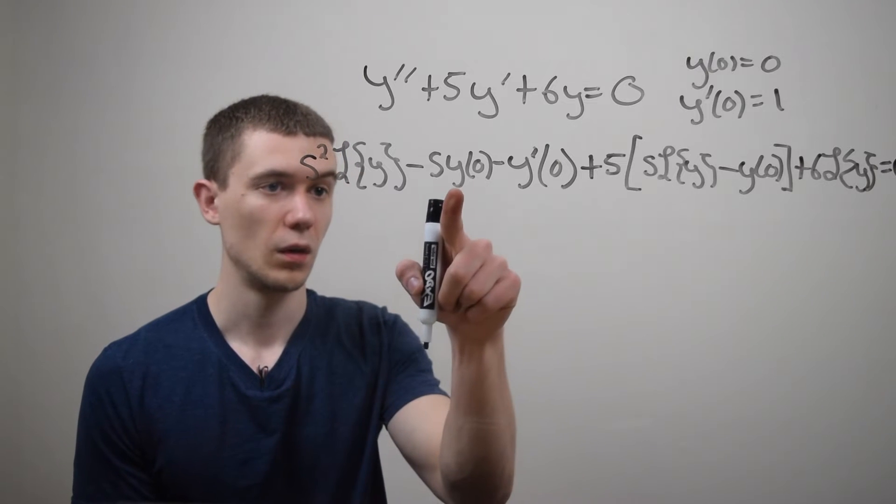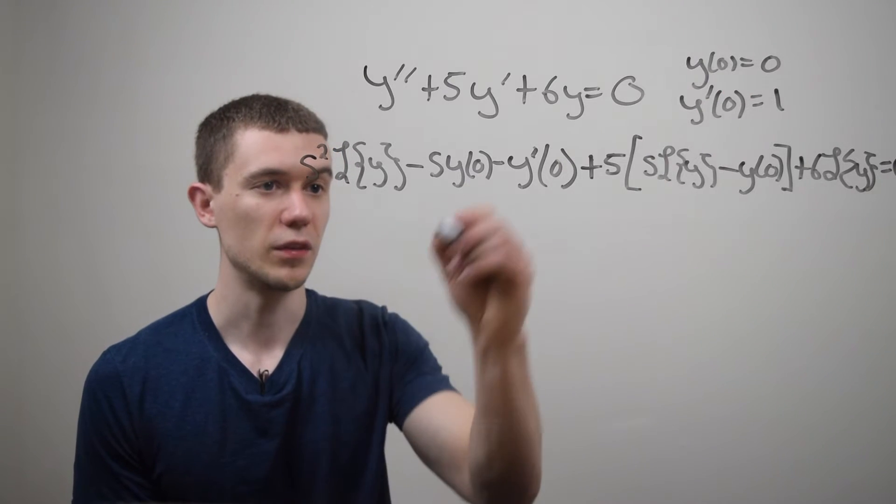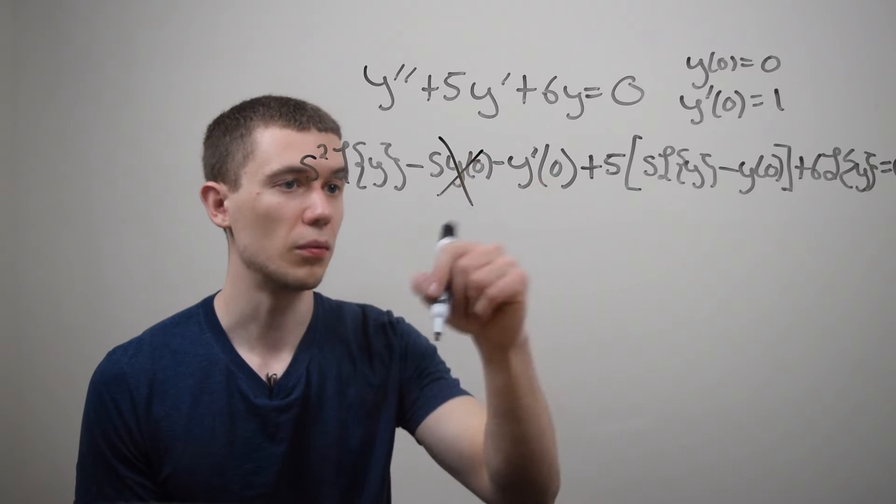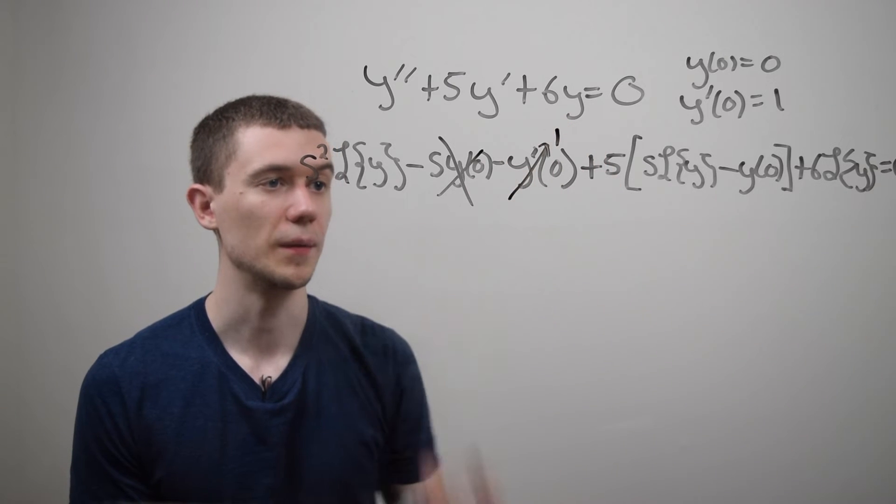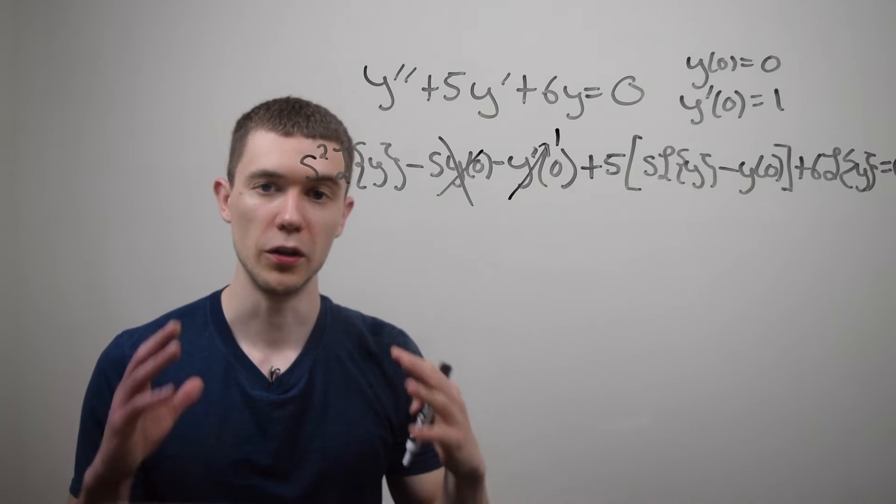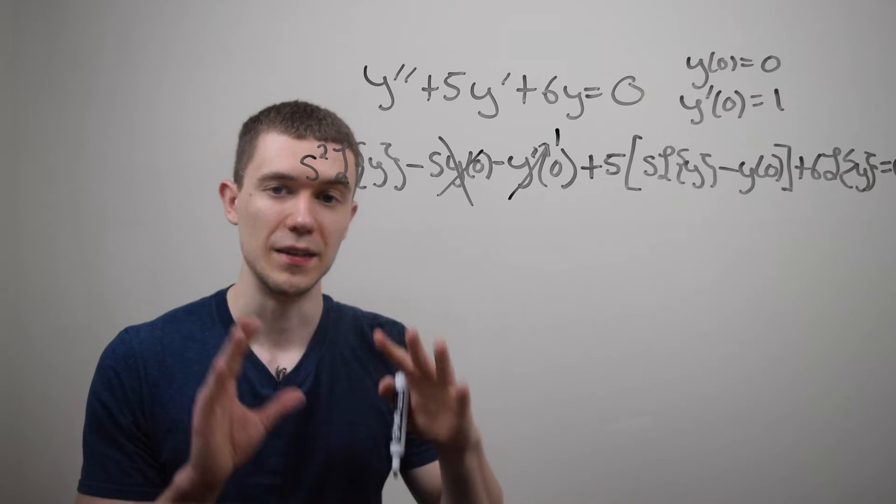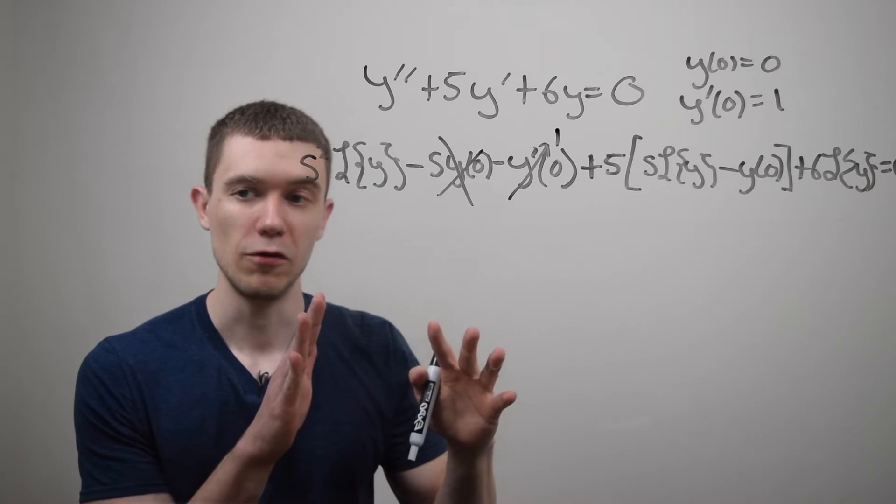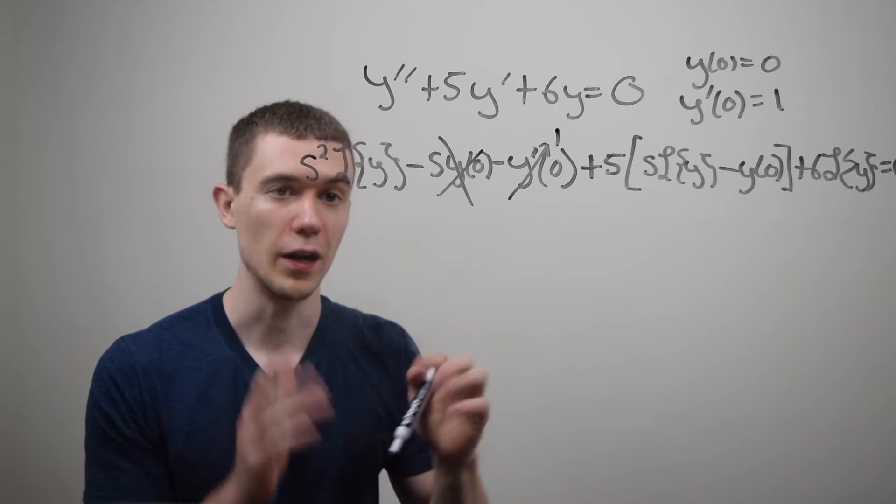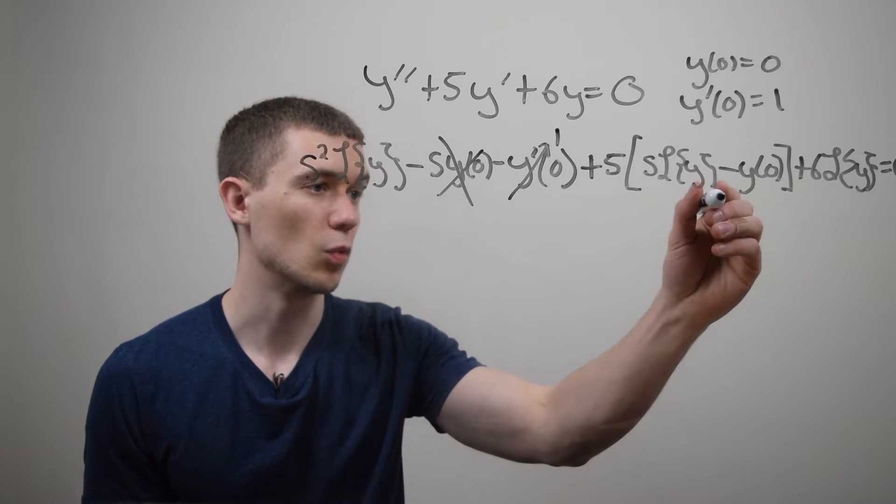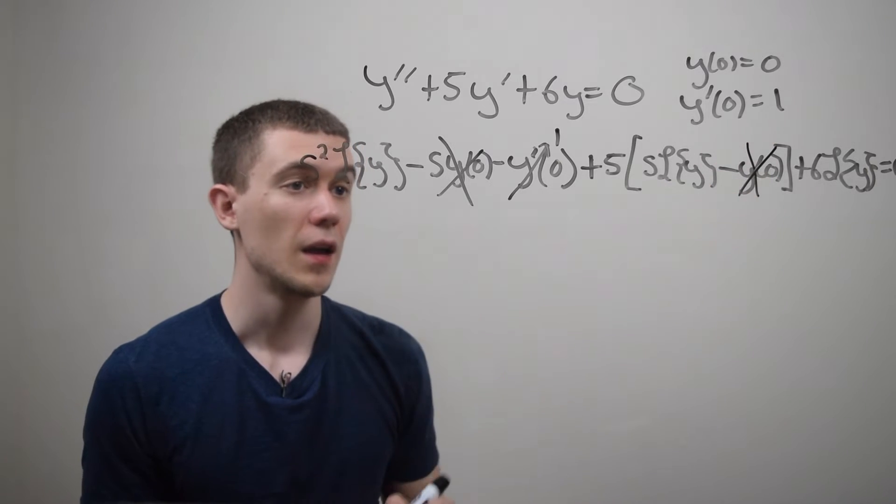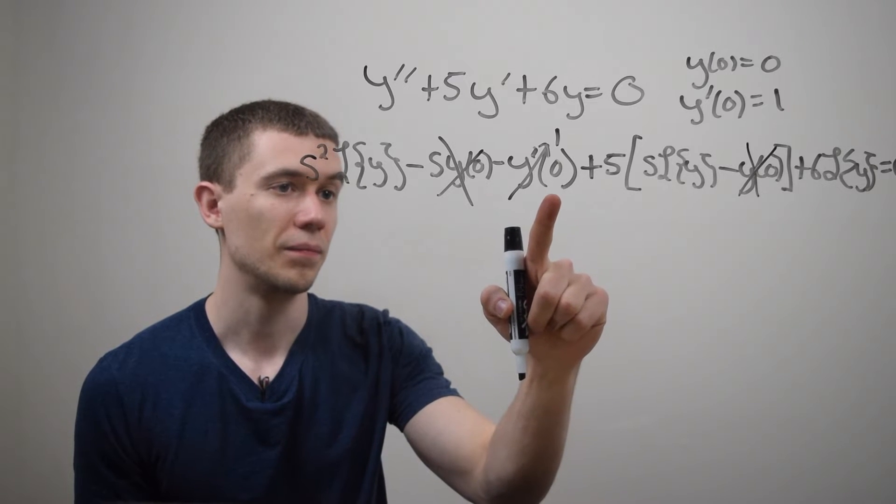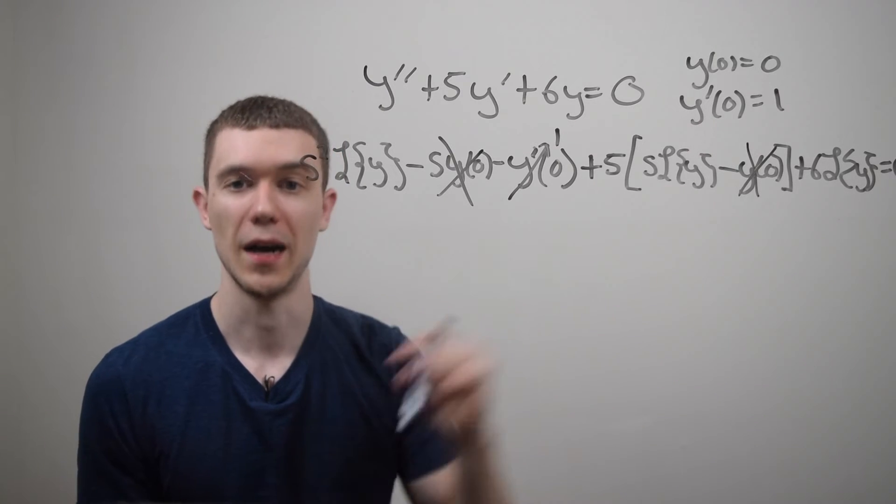I know what y naught is. It was given to me. It was zero. And I know what y prime naught is. This is just one. And what I'm going to do is I'm going to move everything that's not a Laplace transform of y to the right side and keep everything that does have a Laplace transform of y on the left. So in this case, this y naught is also zero. The only thing that's not a Laplace transform of y is this one. In fact, it's minus one. So I'm going to add it to the right hand side.